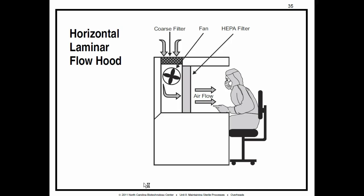The figures that follow show cutaway views of two types of laminar flow hoods: horizontal and vertical. In a horizontal flow hood, the air gets filtered in and blows back out the front. Notice there's no sash — no window. This is intended to protect the material, not the person. Anything that could blow off the material you're working with will blow back toward you.